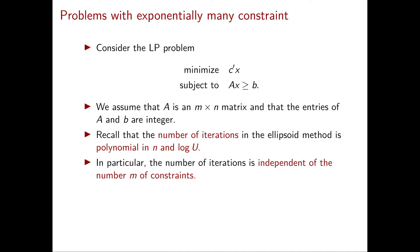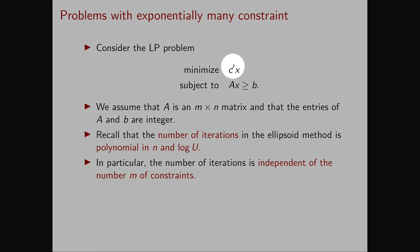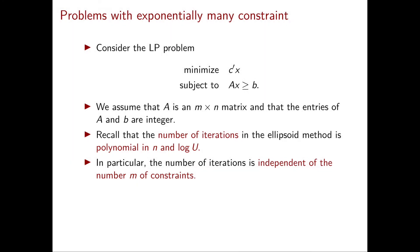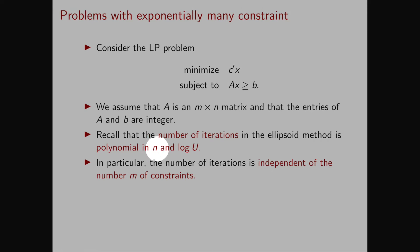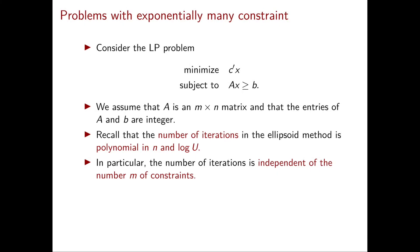As always, we consider the linear programming problem of minimizing C transpose X subject to Ax greater than or equal to b. We assume that the dimension of A is m times n and, without loss of generality, that the entries of A and B are integer. Now we know that the ellipsoid method is able to solve this LP in a number of iterations that is polynomial in n and log U. The key observation is that m plays no role in the number of iterations, so the number of iterations is independent of the number m of constraints.